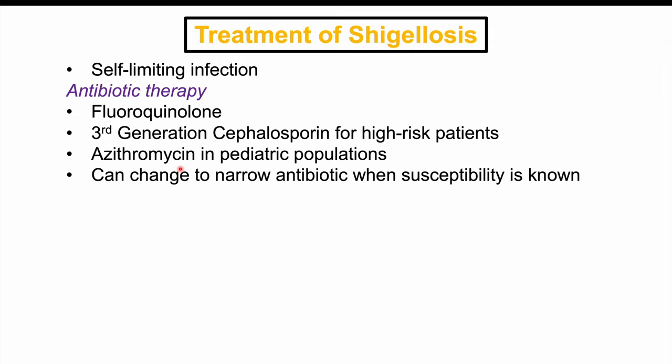Once cultures and sensitivities return, the antibiotic can be narrowed to what the bacteria is actually susceptible to. Shigella has become very resistant to many antibiotics, but the empiric choices mentioned still show enough effectiveness for most species.